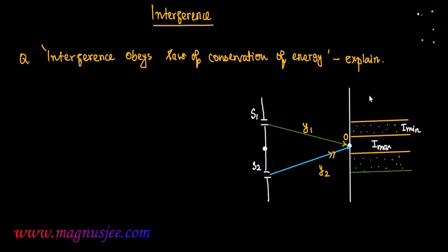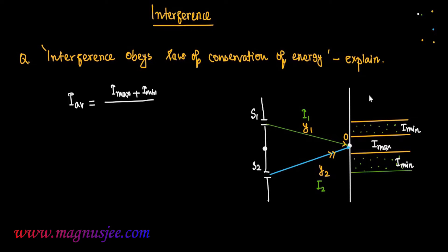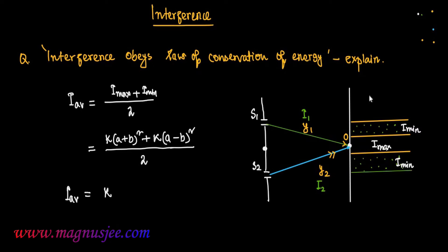Imax is the intensity of the resultant wave for constructive interference, and Imin is the intensity of the interference pattern in the region where destructive interference occurs. I1 and I2 are the intensities of the two interfering light waves. The average intensity of the resultant light wave is: IAV = (Imax + Imin) / 2, which equals K[(A + B)² + (A - B)²] / 2. Therefore, IAV = K(A² + B²).